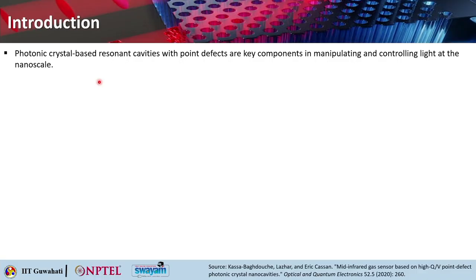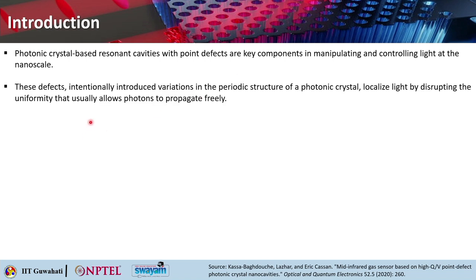Photonic crystal based resonant cavities are formed with point defects, and they are key components for manipulating and controlling light at the nanoscale. These defects are intentionally introduced as a variation to the otherwise normal periodic photonic crystal structure, and they allow you to localize light by disrupting the uniformity that usually allows photons to propagate freely.